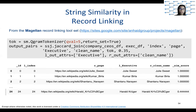Let's see this in action using one of the record linking toolkits called Megalyn. Megalyn is a set of libraries for record linking at scale. There are two components: the tokenizer pulls out the q-grams, and the join looks at the similarity between the q-grams. Here we set q equals to five, and we do a Jaccard join between the two tables using the q-grams tokenizer with a threshold of 0.35.